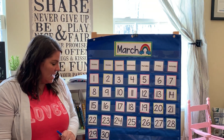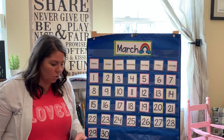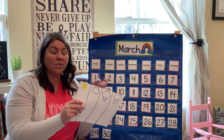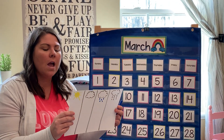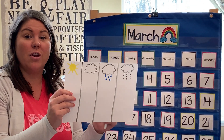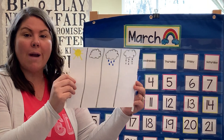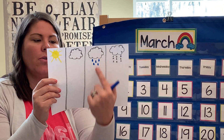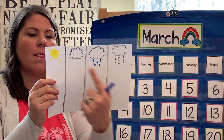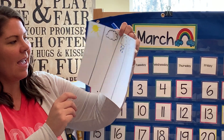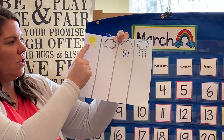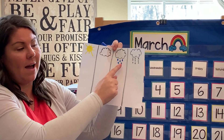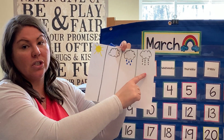Now the next thing we are going to do is practice graphing the weather. So this is something new — we haven't done this before, so this is going to be exciting. I want you to grab a piece of paper and make one, two, three, four lines down your paper. Then in each section, I want you to make a sun, a cloud, a cloud with raindrops, and a cloud with snow.